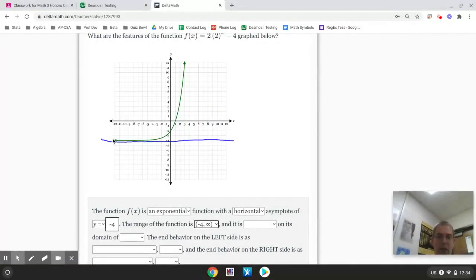And then, as I trace this function going from left to right, I notice it is always increasing. So, this function is increasing on its domain of. And there are no restrictions of the domain. The domain starts over here. It keeps going.